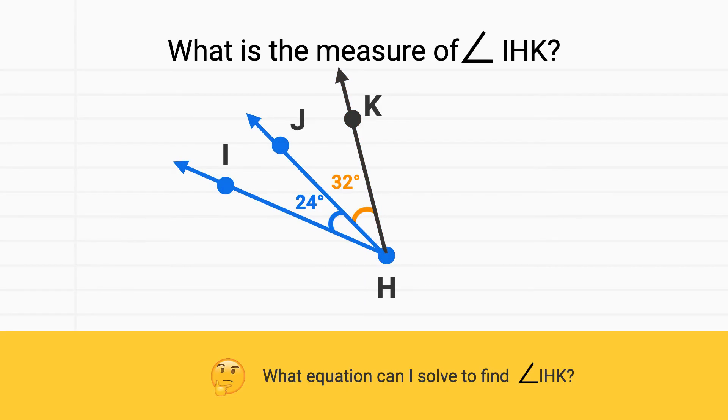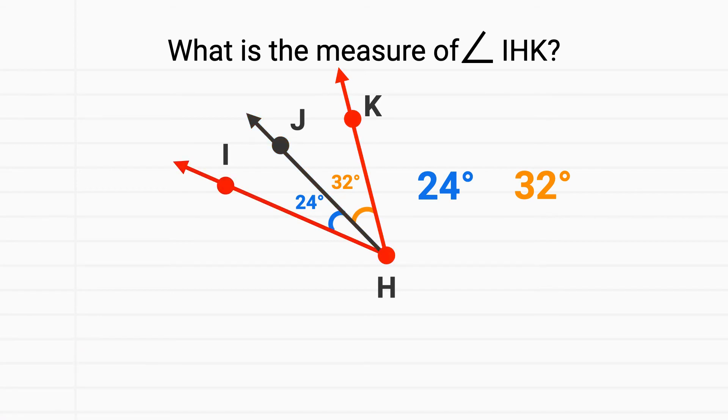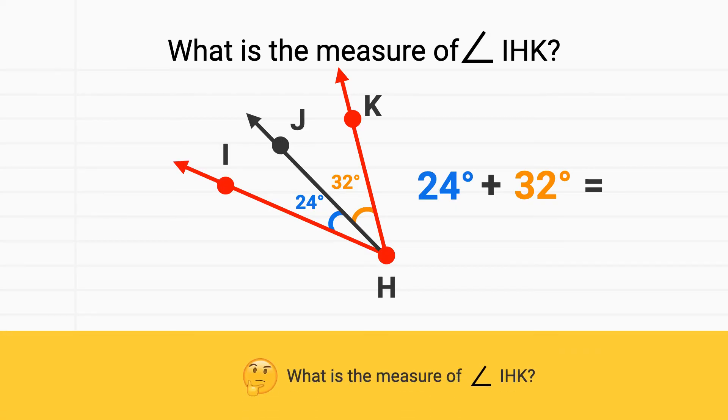The first piece is angle IHJ in blue, which has a measure of 24 degrees. The second piece is angle JHK in orange, which has a measure of 32 degrees. To find what IHK is, all I need to do is add those two pieces together. What is the measure of angle IHK? If you add those two up, you get the measure is 56 degrees.